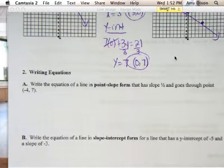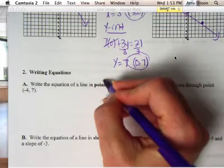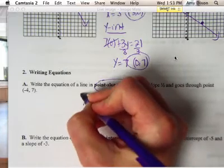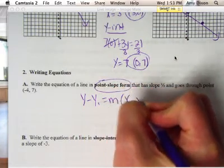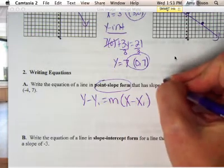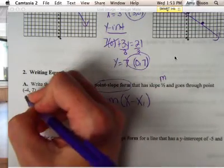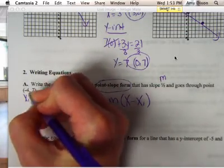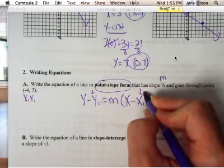The first problem says write the equation of a line in point-slope form that has a slope of 1 half and goes through point negative 4, 7. Point-slope form is your key word. That means you're going to do y minus y1 equals m parentheses x minus x1. We have m — 1 half is your m. And then they give you a point, which is your x1, y1. You're going to plug those values into y1, x1, and m.